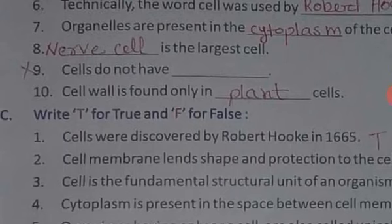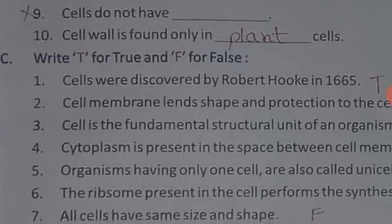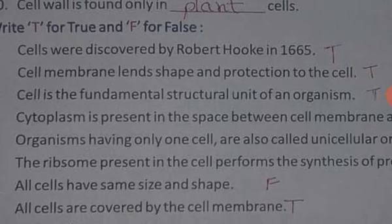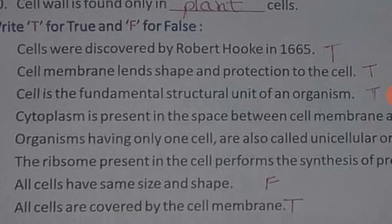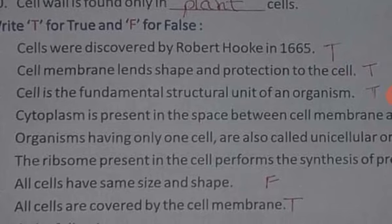In all living things, life begins with a cell. Technically, the word cell was used by Robert Hooke first. Organelles are present in the cytoplasm of the cell. Nerve cells is not the correct answer for largest cell, the correct answer is ostrich egg.